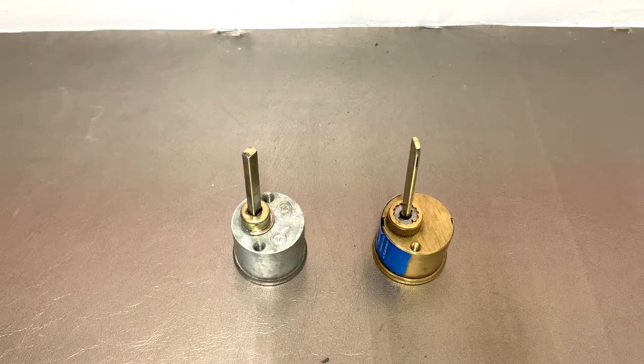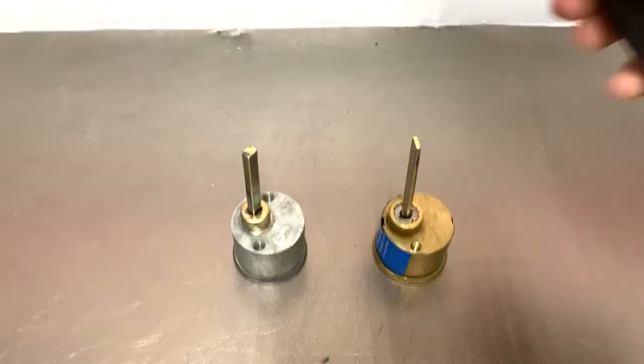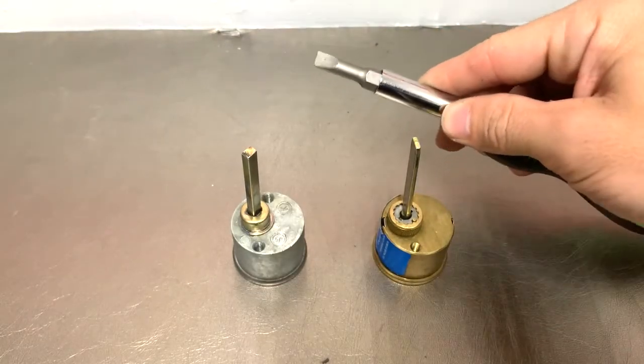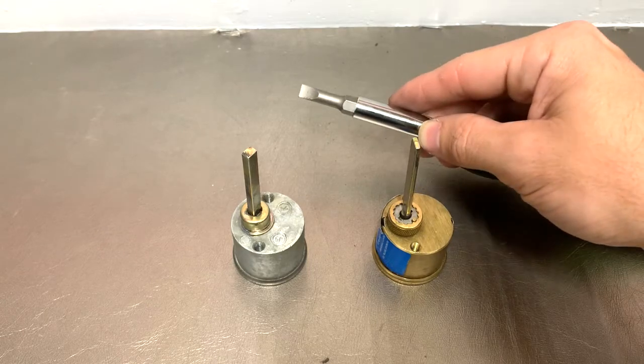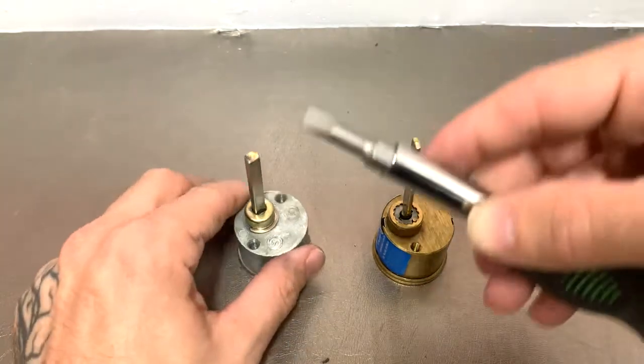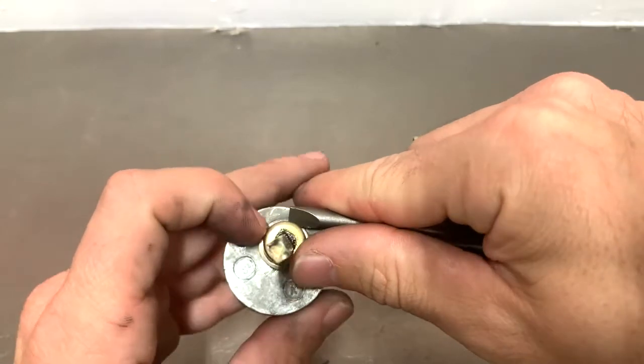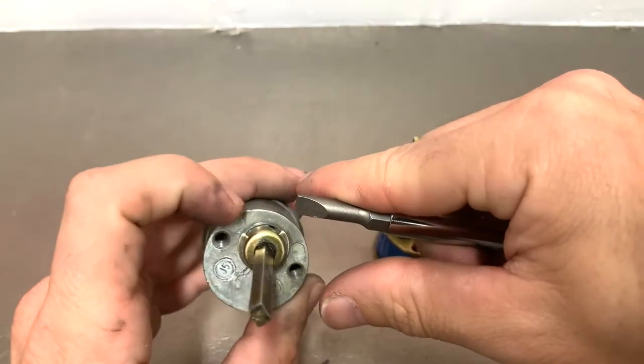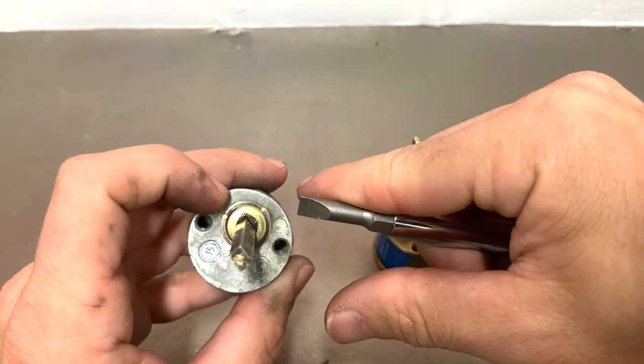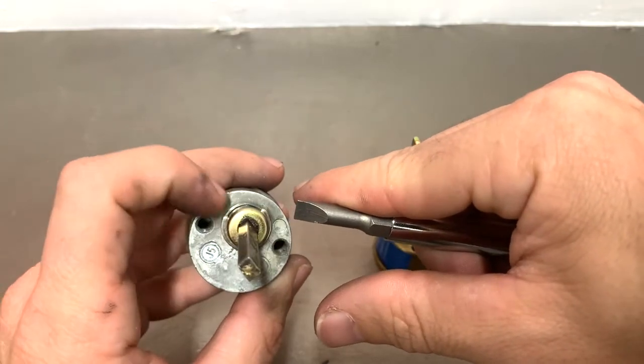We'll use just a screwdriver here as if you're trying this yourself at home, or maybe you're a locksmith in the field and this is like your first day and you don't have your Kwikset tool or anything. You can just take your finger and place it right here to one side of the clip.